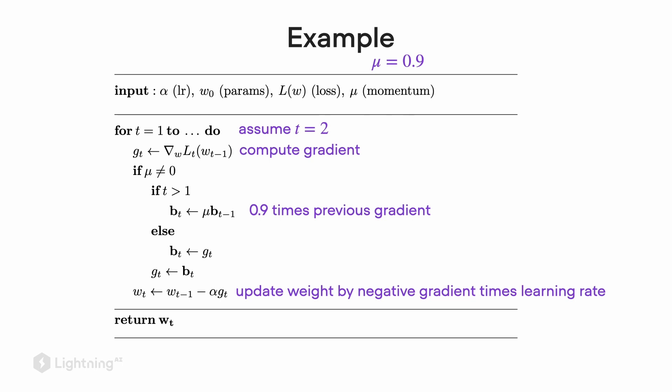Let's assume we are in round two, so t equals 2 now. In the second round, just like before, we first compute the gradient. Now since t equals 2, we enter this if statement here. We now use the momentum coefficient 0.9 and multiply it with the previous b value, which is essentially the original gradient from the first round. After we computed this term, we use it to update the weights. Instead of using the negative gradient, we are using this slightly modified negative gradient, which has now also this momentum coefficient included.